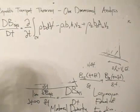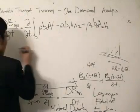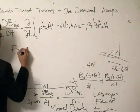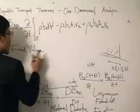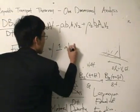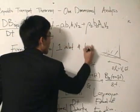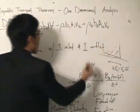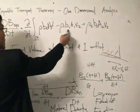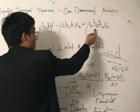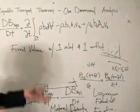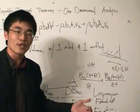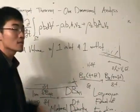Now there are certain restrictions to it. The first restriction is that we are looking at a fixed volume — a fixed control volume — with one inlet and one outlet. The inlet is this one here, and the outlet is this one here. Is it reasonable? Yes, because jet engines, for example, normally have one inlet and one outlet.